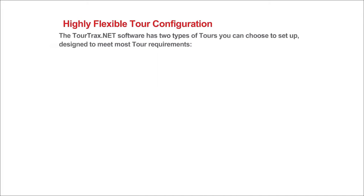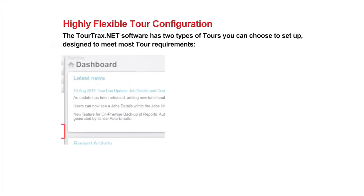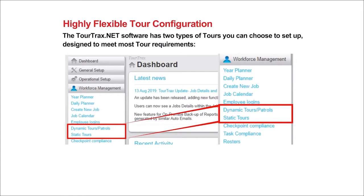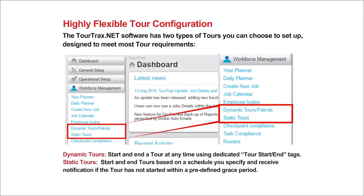The TourTrax.net software has two types of tour verification designed to meet most tour requirements. Dynamic Tours: start and end a tour at any time using dedicated tour start-end tags. Static Tours: start and end tours based on a schedule you specify, and receive notifications if the tour hasn't started within a predefined grace period.